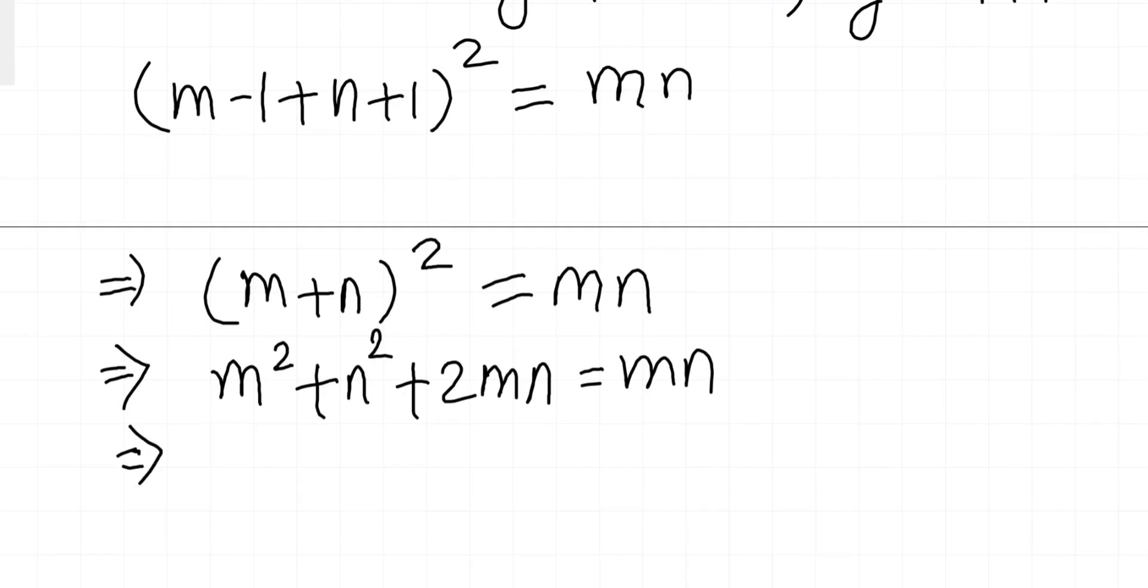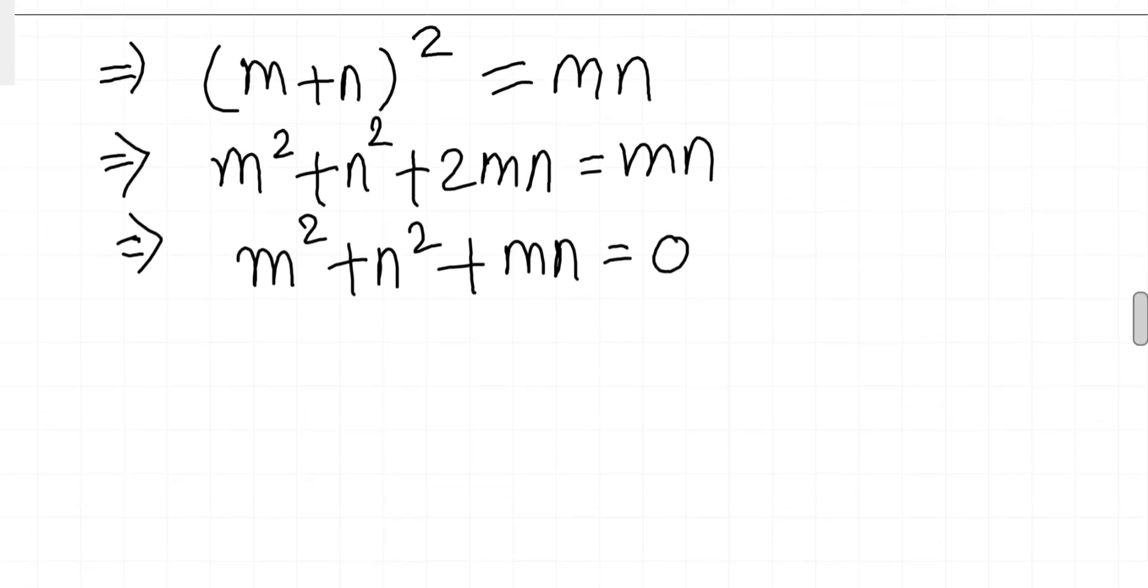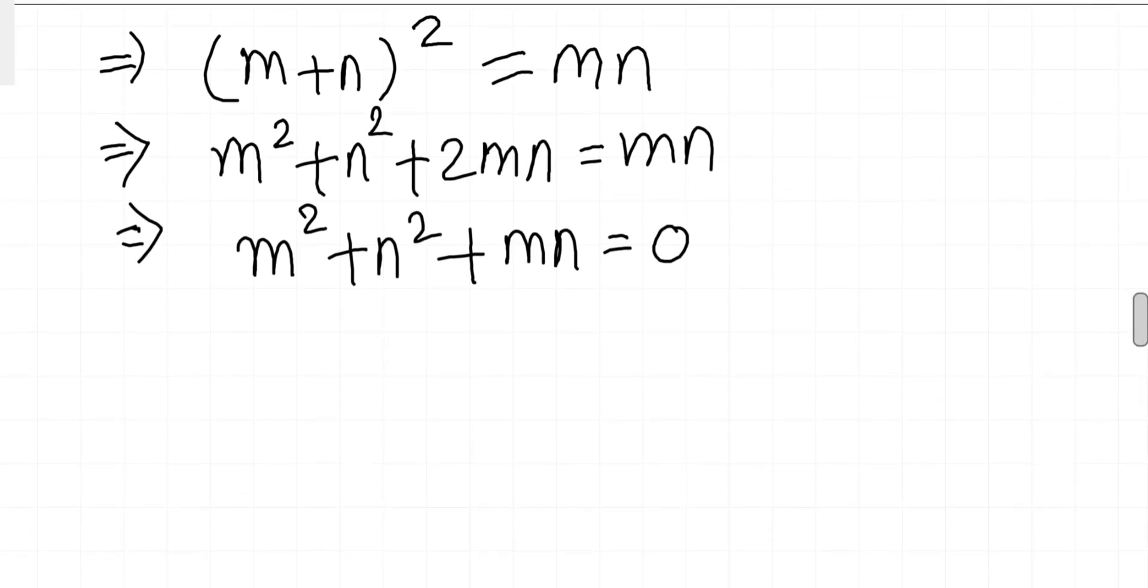The more simplified version is m squared plus n squared plus mn equals zero. Now what we are going to do is multiply by 2 and divide by 2 to factorize this.